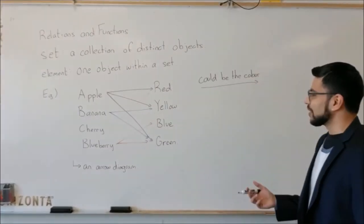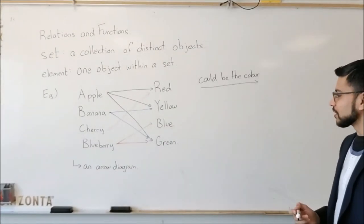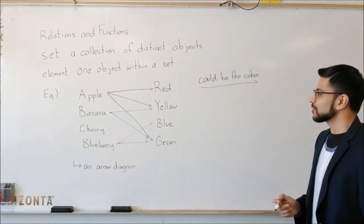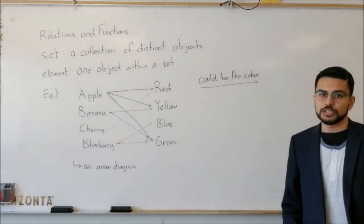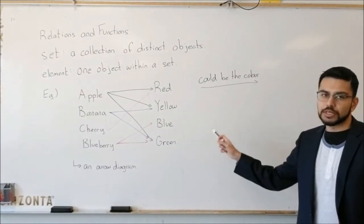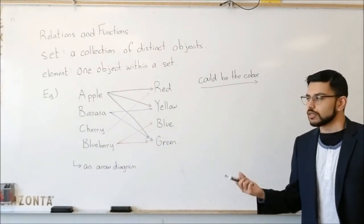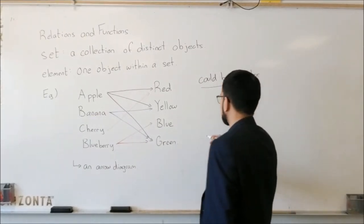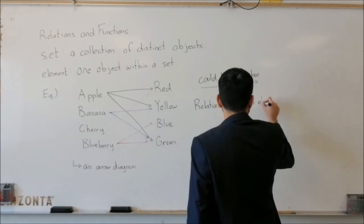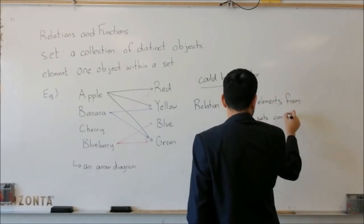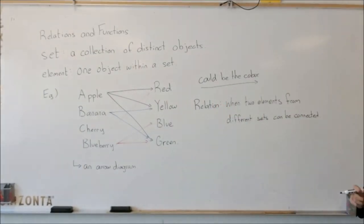So the arrow heads are significant when we're drawing something like this. Sorry, I'm getting out of frame here, if that's okay. Now there's two other ways that we can represent these relationships. Before I get that down, I'm going to give you a note on what a relationship is, because it's not here yet. I don't know if that's in frame, it looks like it. So a relation is when two elements from different sets can be connected.